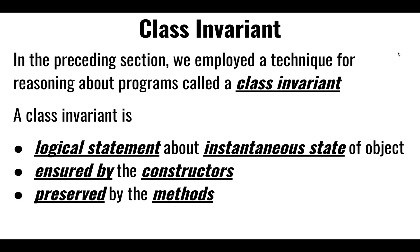Once we identify the logical statement, we have to make sure that any constructors, methods, or any operation, any algorithm that affects any variable or any state, ensures that this logical statement stays true. The first step is identifying what these invariances are, and by class we mean for a given class, identify what needs to be true about that class.